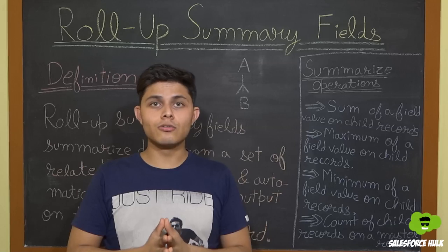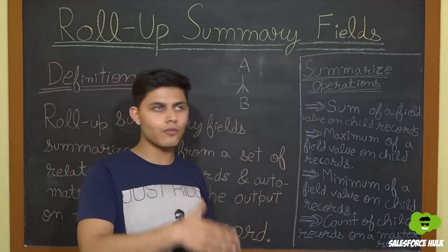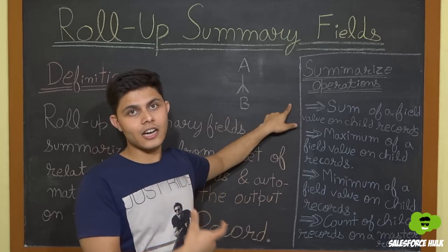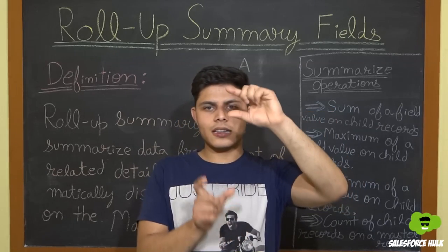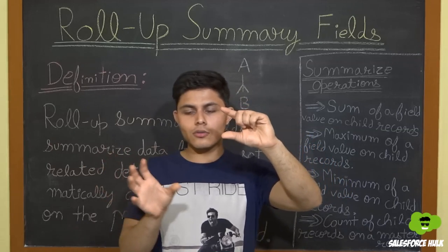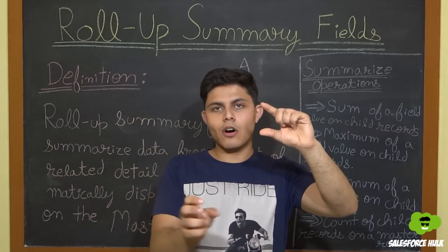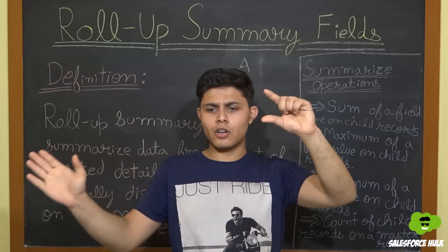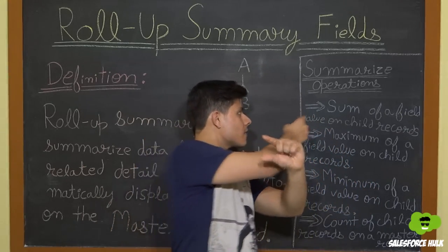This summarize operation includes four types. You can choose any one, or create multiple Rollup Summary Fields with different operations. The first operation is sum of a field value on child records. For example, there is a record of object A, and there are multiple records of object B — B record 1, B record 2, B record 3. There is a field on object B called amount. You want to sum all those amounts and display the total on the master record, which is A. In that situation, you'll create a Rollup Summary Field and select the operation as sum.